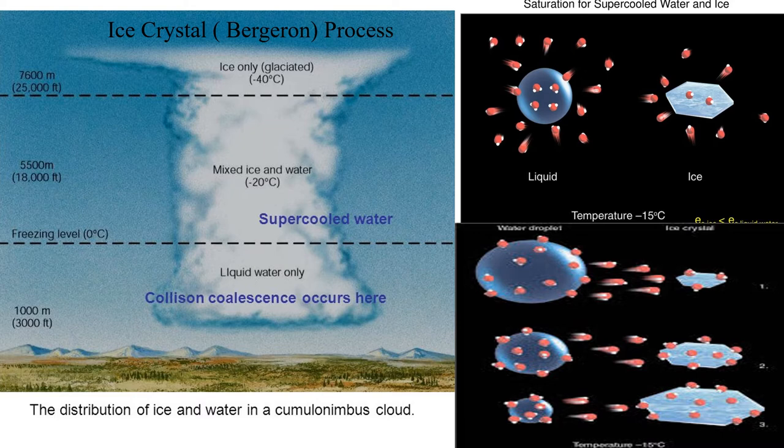The ice crystal or Bergeron process of rain forming is extremely important in the middle and high latitude regions, but the cloud must extend upward into the regions where the air temperature is well below the freezing point.